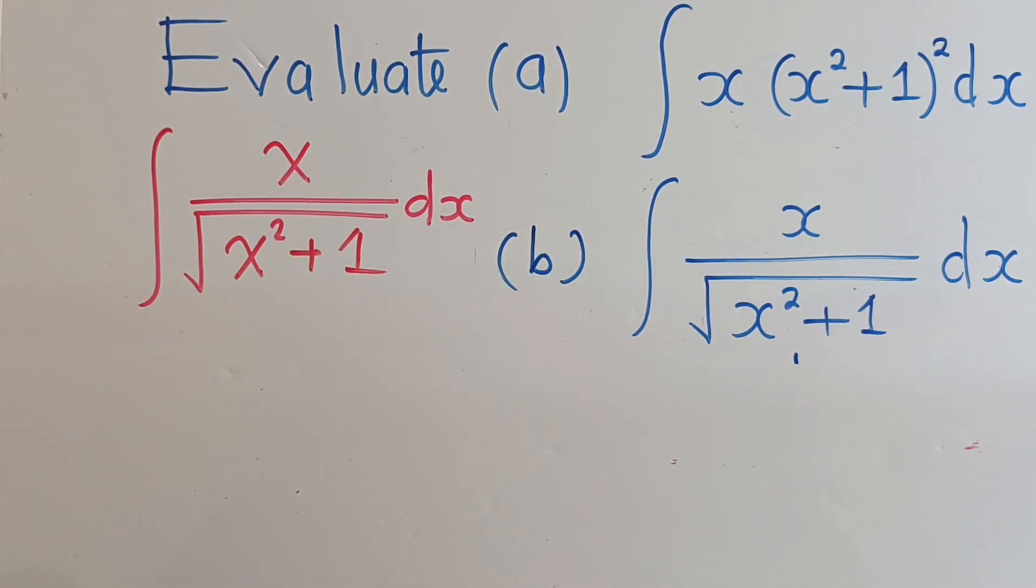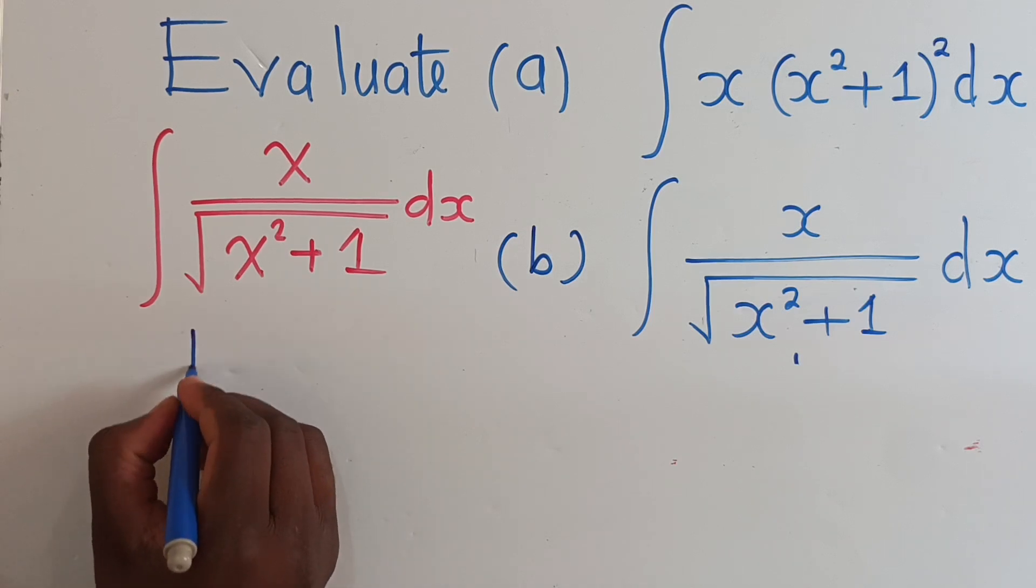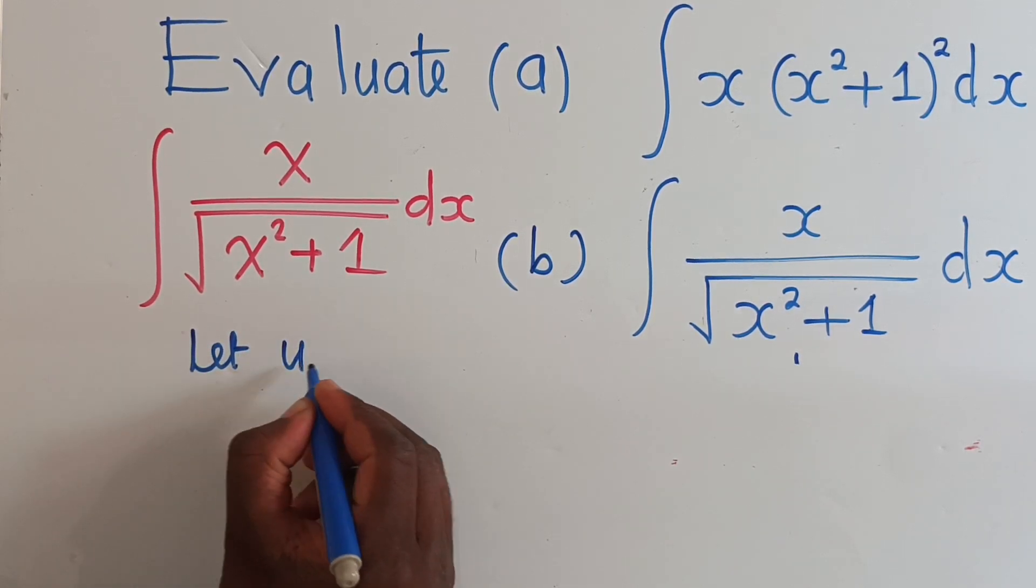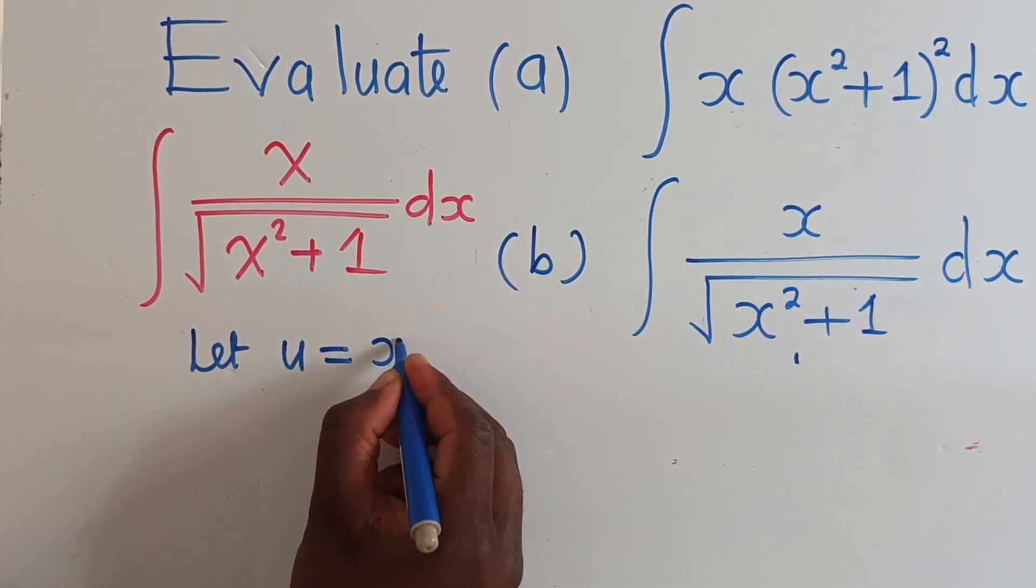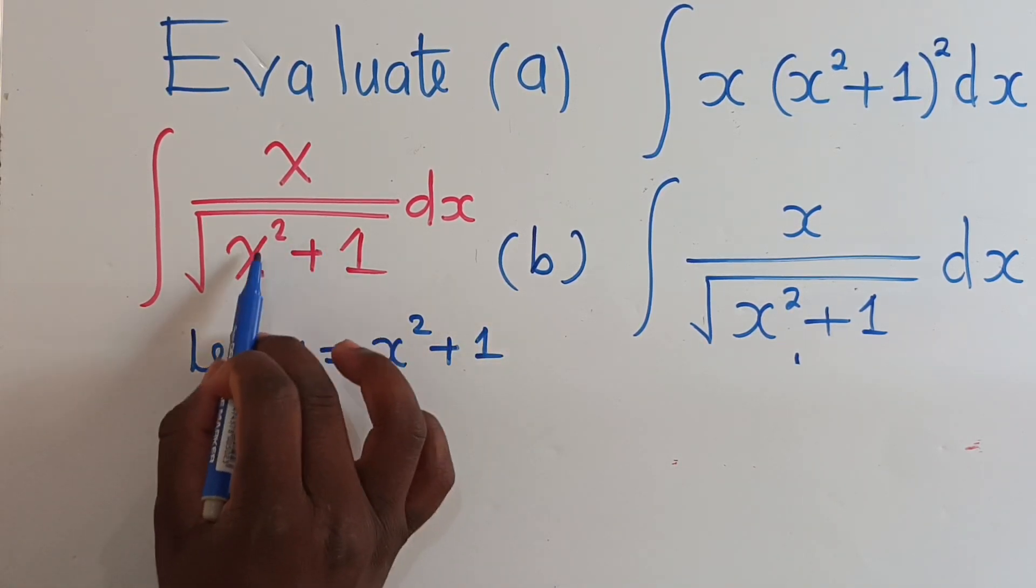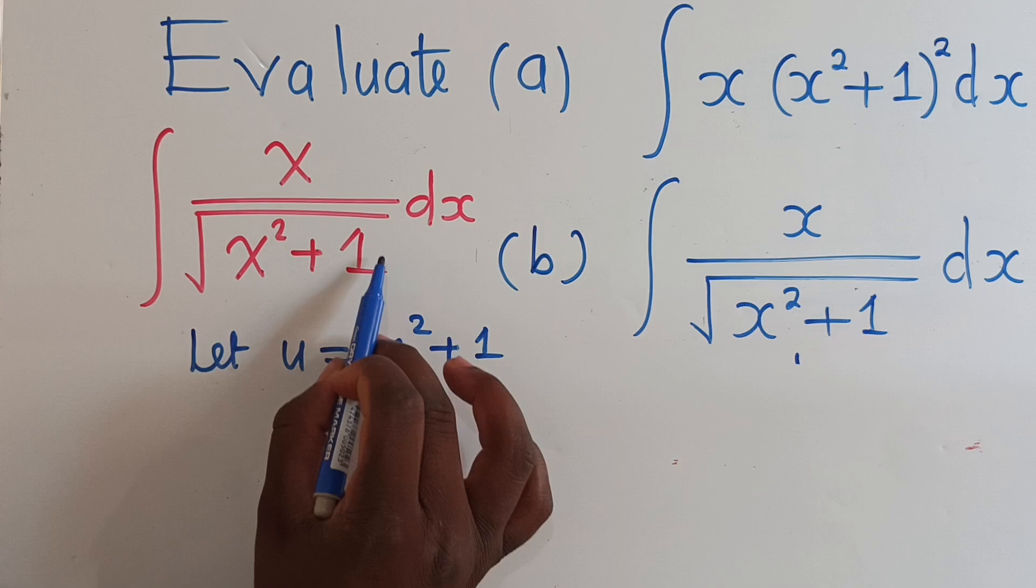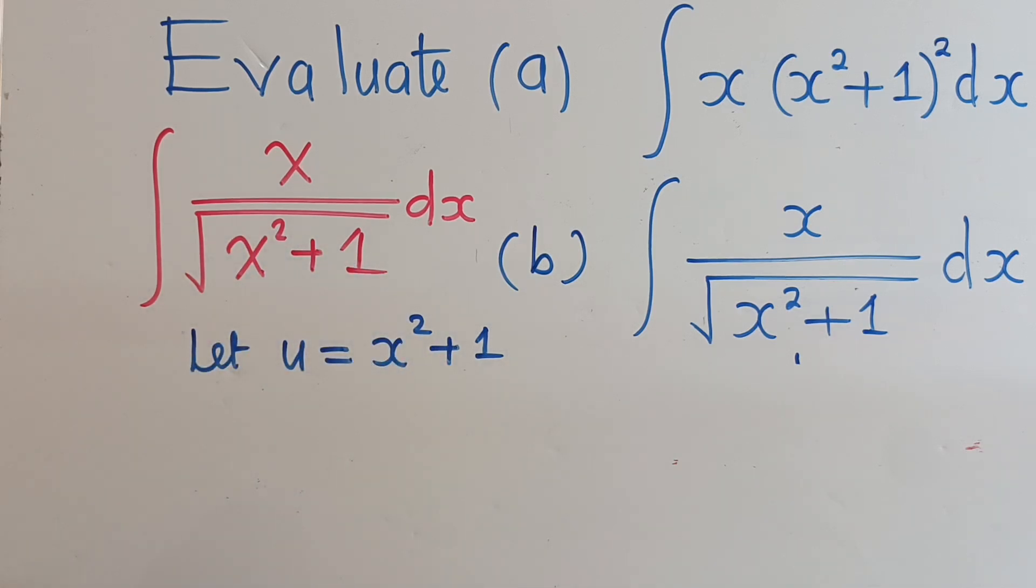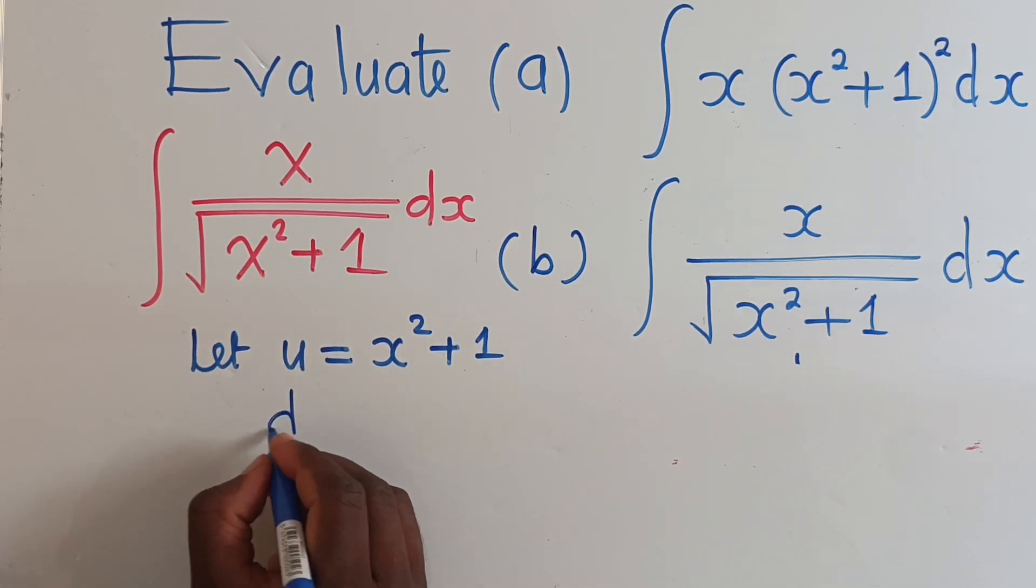So like we did with question a, we're going to say let u be equal to x² plus one. So get the denominator here. Now what is under the root must be your u. Again, we find the derivative of u with respect to x.